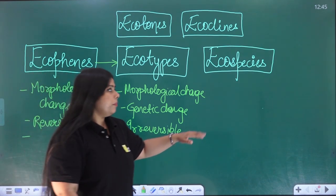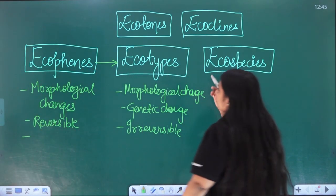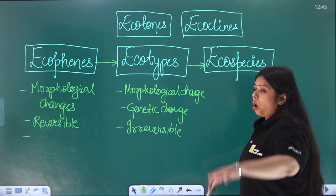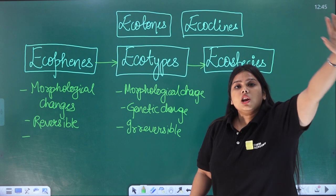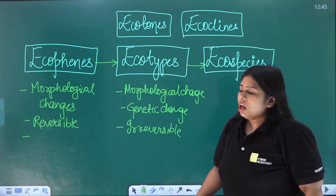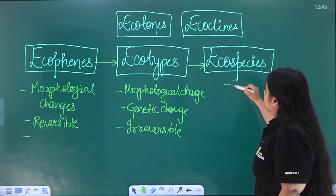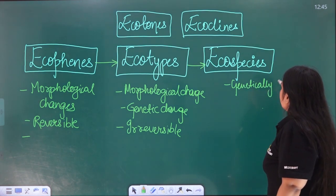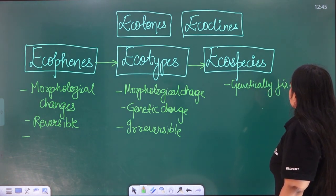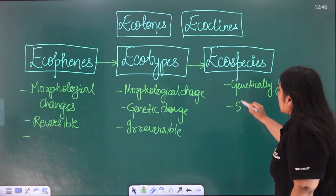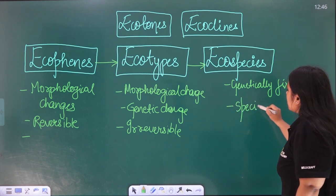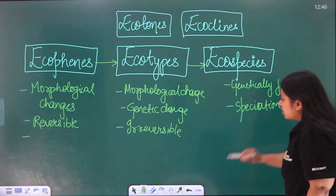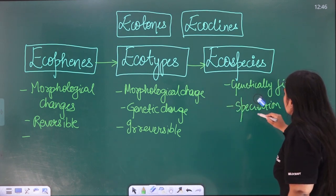In Ecotype, ultimately they are genetically fixed. They are genetically fixed, and they can become a new species — it can become speciation.